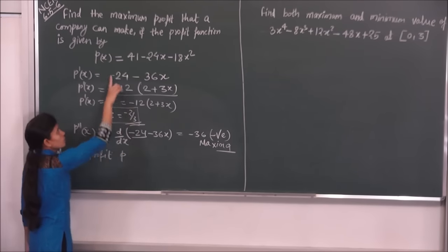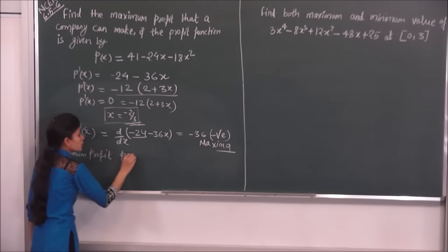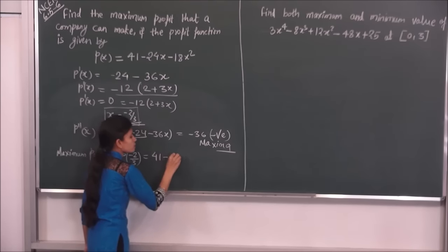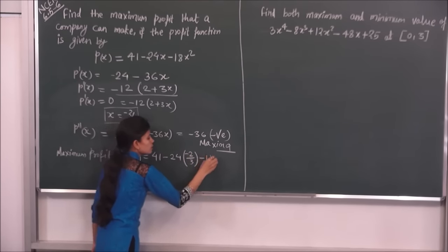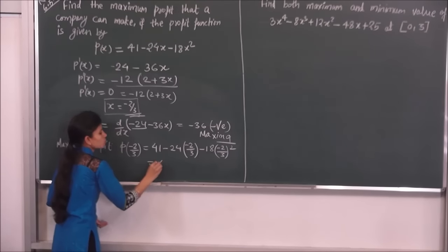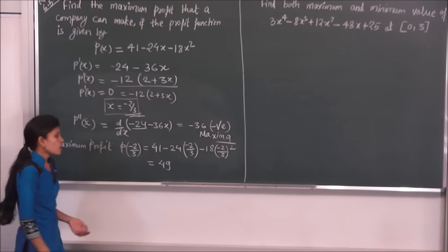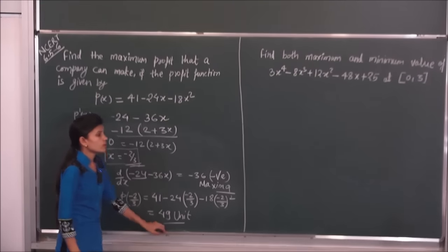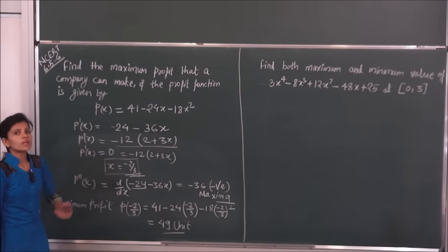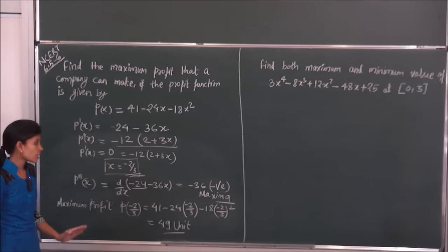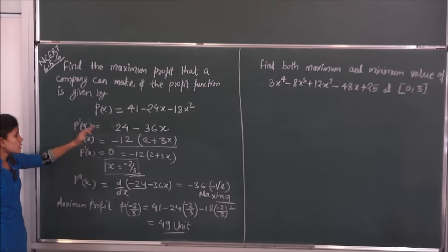Maximum profit find करने के लिए function में x = -2/3 put करते हैं: P(-2/3) = 41 - 24(-2/3) - 18(-2/3)² = 49। इसका maximum profit 49 मिल रहा है। यहाँ पर हमने वही steps follow किये जो maxima value find करने के लिए करने पड़ते हैं: पहले first differentiation, फिर first derivative को 0 से equate किया, फिर second derivative का sign check किया।